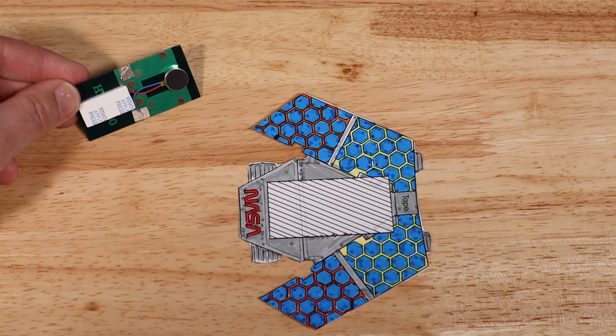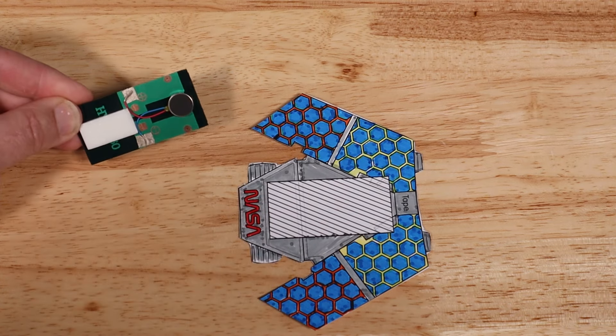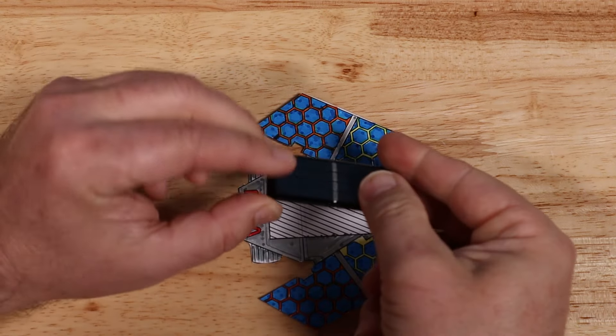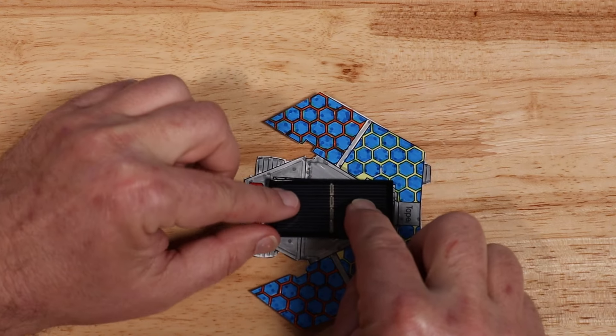Now that we know the circuit works, we'll assemble it onto the rover. Peel the remaining backing off the foam tape and press the entire solar circuit in place on top of the rover so that it sits over the printed rectangle.